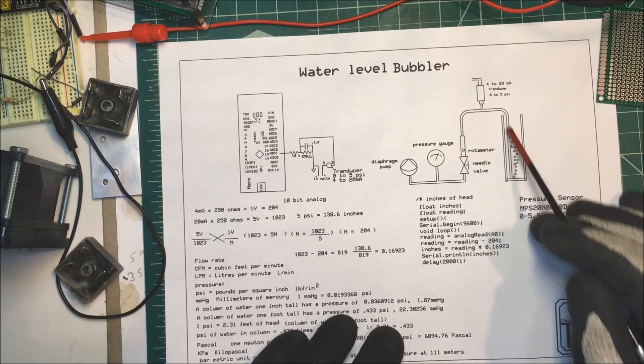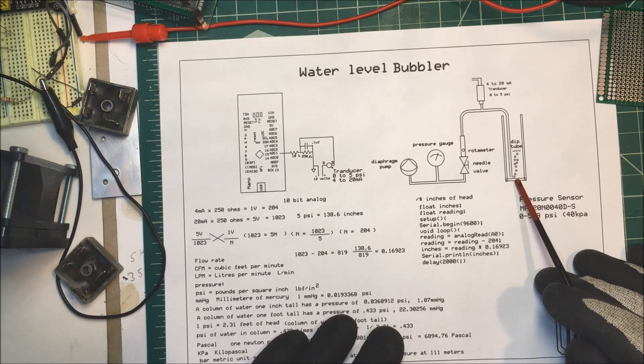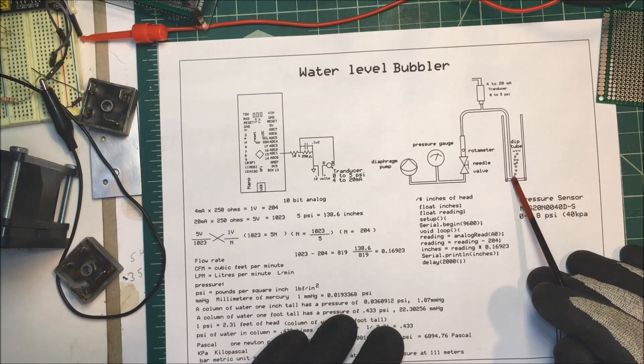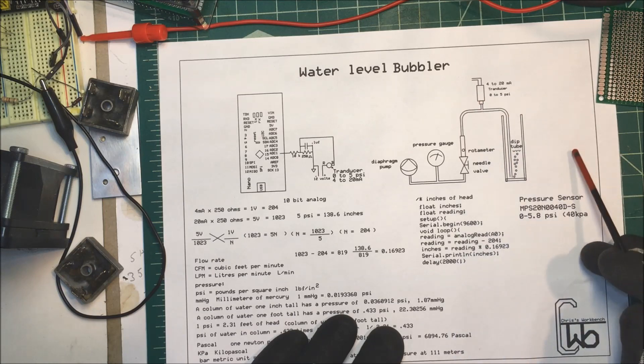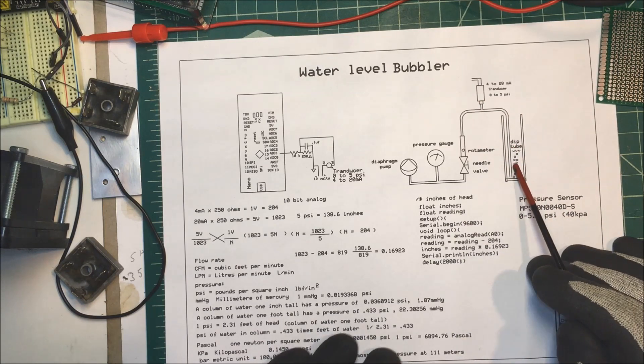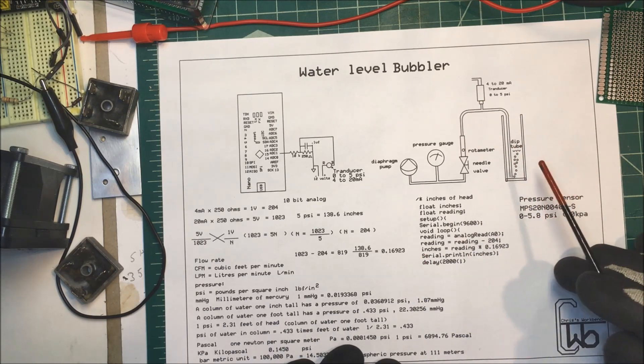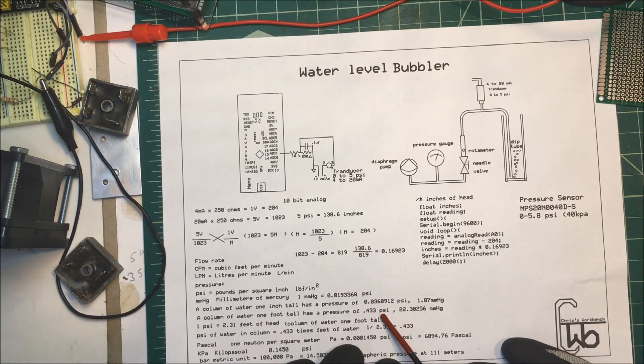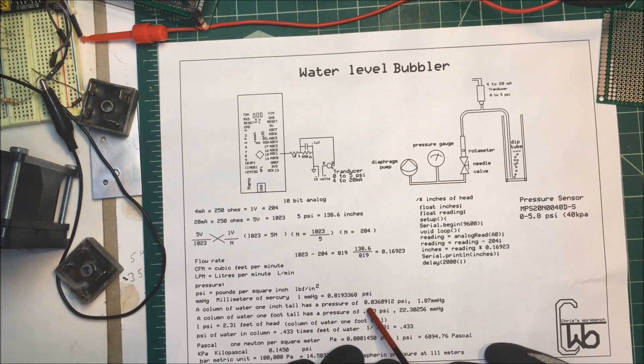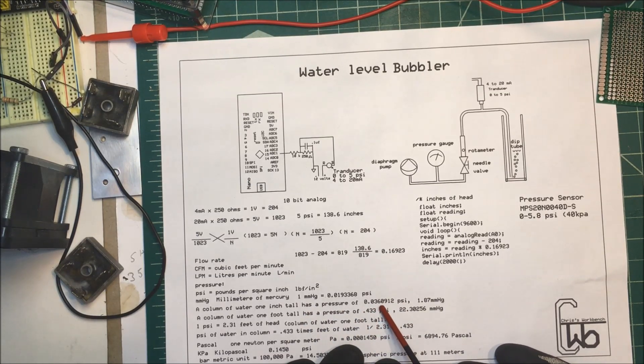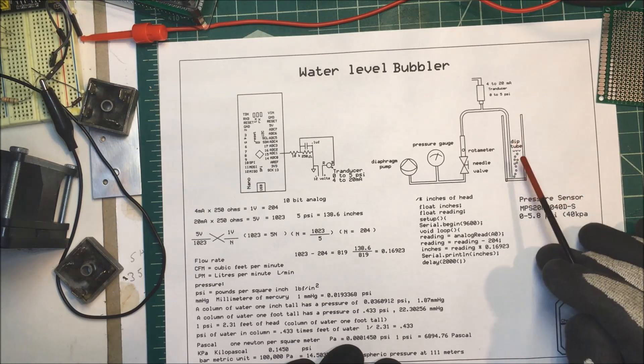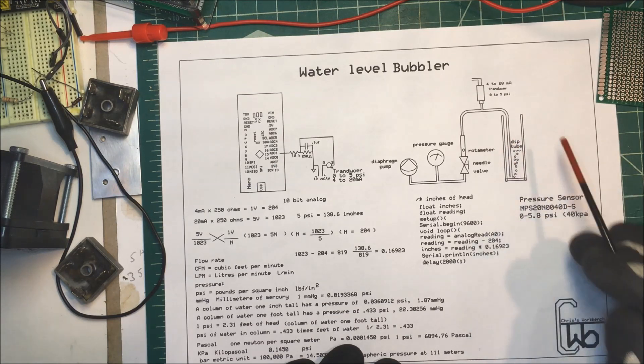Now the air goes down to the bottom of the system here and the water here is going to create a pressure on this tube here. And we're going to read that pressure here. Now, a column of water one foot tall has a pressure of 0.433 psi. And a column water one inch tall has a pressure of 0.03609 psi. So we can use that pressure to determine the height of the water, the level.